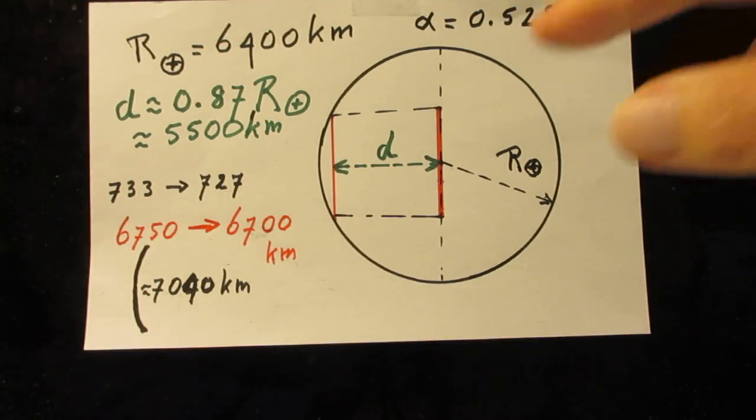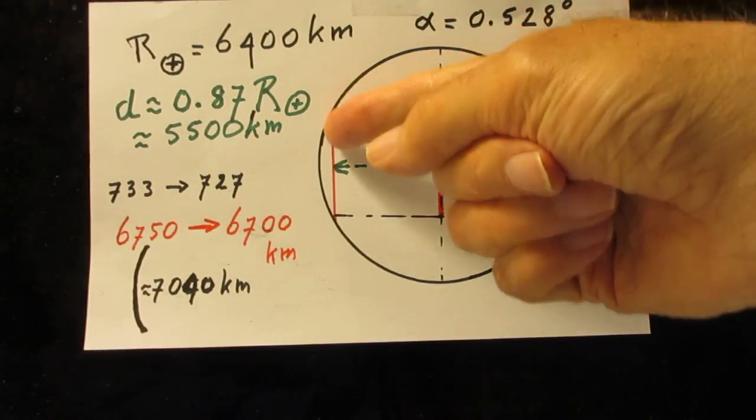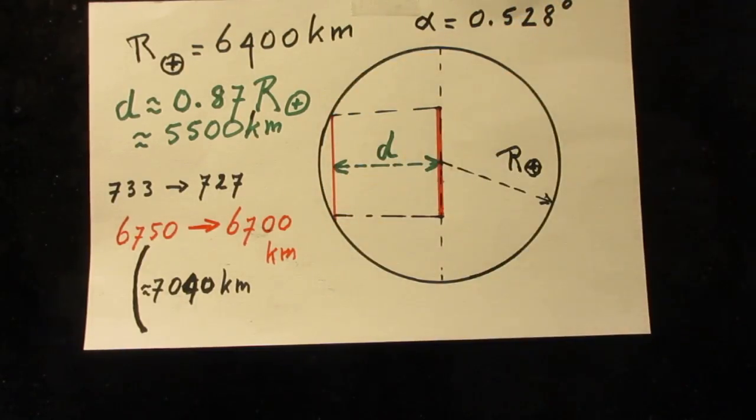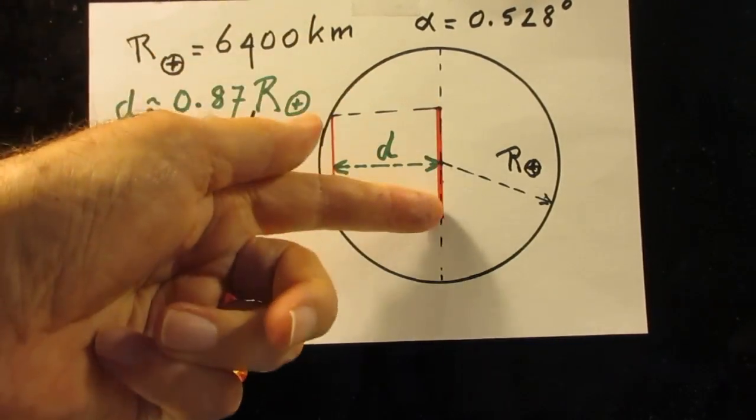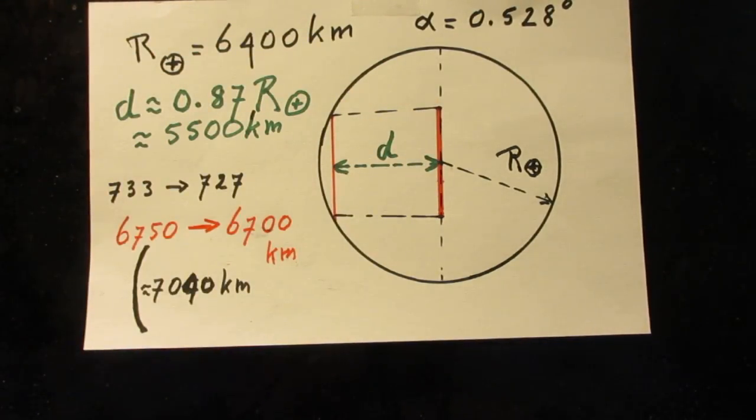You can argue, however, that since the penumbra will really hit here, because the Moon is on the left side, that this is a little smaller than that. And that can easily be calculated.